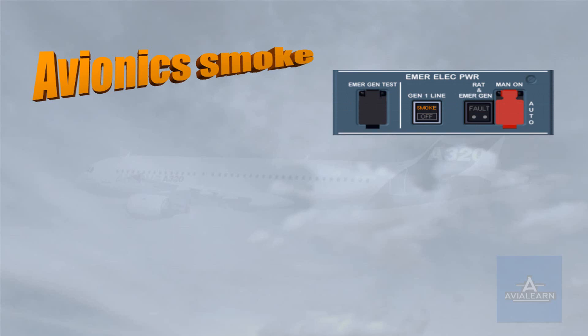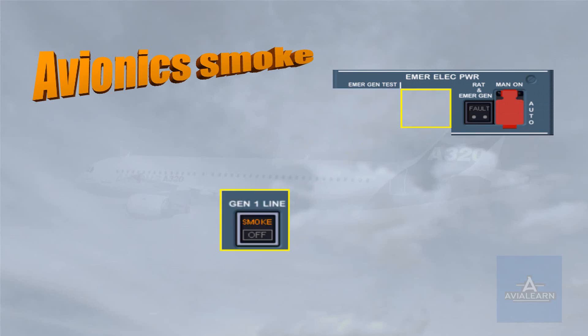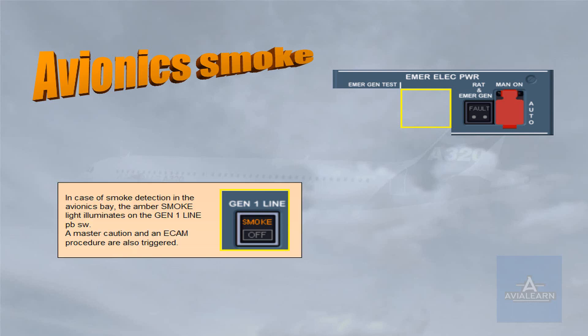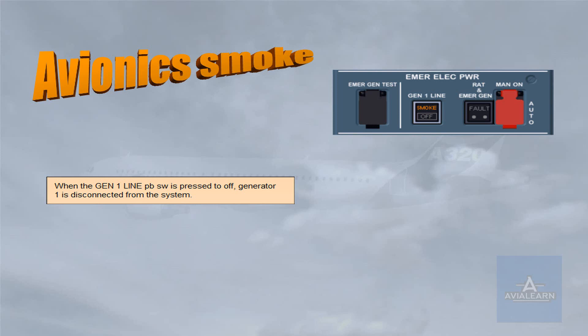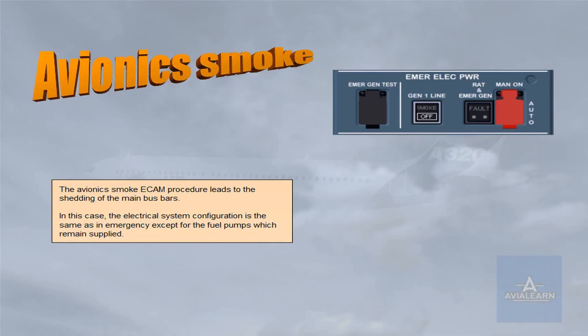In case of smoke detection in the avionics bay, the amber smoke light illuminates on the gen 1 line push-button switch. A master caution and an ECAM procedure are also triggered. When the gen 1 line push-button switch is pressed to off, generator 1 is disconnected from the system. The avionics smoke ECAM procedure leads to the shedding of the main bus bars.